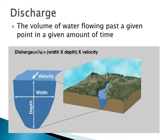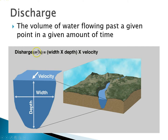Now we're going to look at stream velocity — how fast streams move and how much water moves through them. We measure how much water is in a stream by describing the discharge. Discharge is defined as the volume of water flowing past a given point in a given amount of time. We can also describe discharge with a mathematical equation: discharge equals the width of the stream times the depth of the stream times the velocity of the stream. Width and depth are both in meters and velocity is in meters per second, so when you multiply all this together you get meters cubed per second. Meters cubed is a volume, so it's a volume per time.